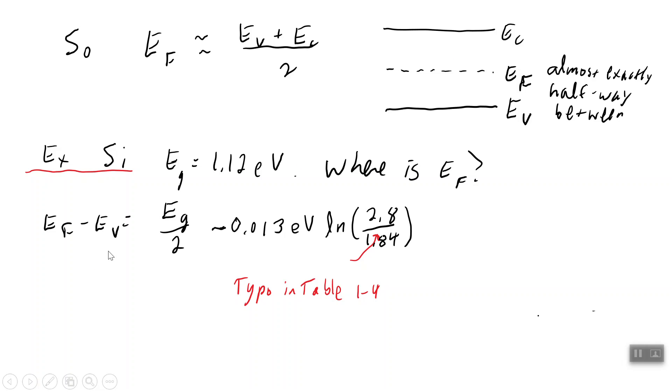E Fermi minus E valence equals half the energy gap minus KT over 2, or 0.013, natural log of, and for silicon, Nc over NV is 2.8 times 10 to the 19th divided by 1.84 times 10 to the 19th per cubic centimeter. Plugging those things in, you get 0.56 for half the energy gap.